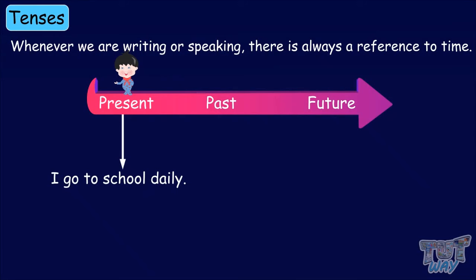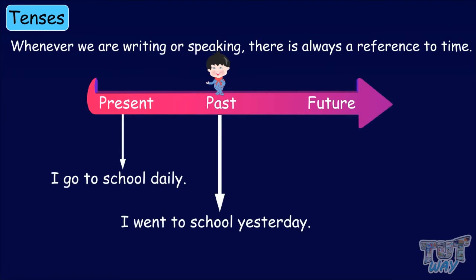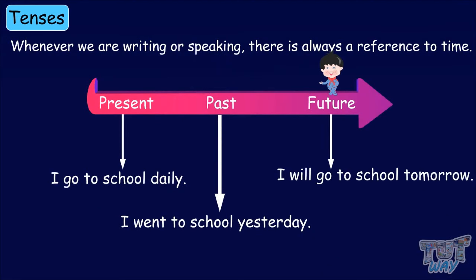For example: 'I go to school daily' — this statement is in present tense. 'I went to school yesterday' — here we are talking about something that has happened in the past. 'I will go to school tomorrow' — here we are talking about something that will happen in the future. So every sentence is either in present tense, past tense or future tense.